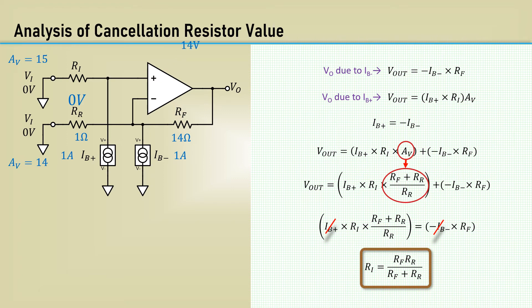The negative input bias current of 1 amp would cause an output error of 14 volts, so what kind of change would be needed on the non-inverting input to cancel out the 14 volts? Since the non-inverting gain is 15, it would be 14 volts divided by 15, which equals 0.933 volts. 0.933 volts times 1 amp equals 0.933 ohms, the same as 14 ohms in parallel with 1 ohm.